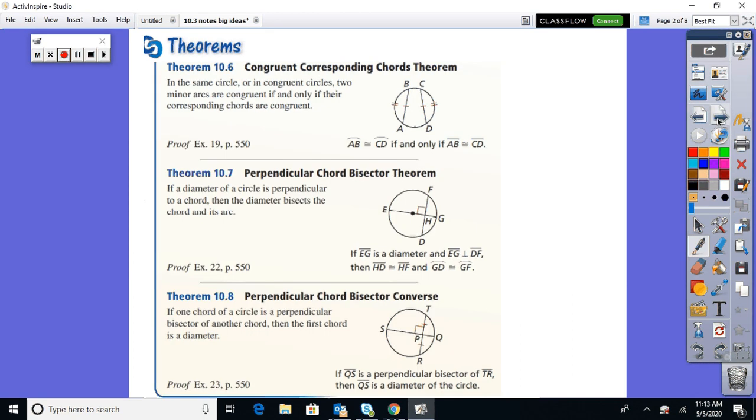Now, mucho theorems here. And pretty logical. Let me go through what each one is breaking down. A lot of words. Let me just try to make some sense of this stuff. So in 10.6, in the same circle, or in congruent circles, two minor arcs are congruent if and only if their corresponding chords are congruent.